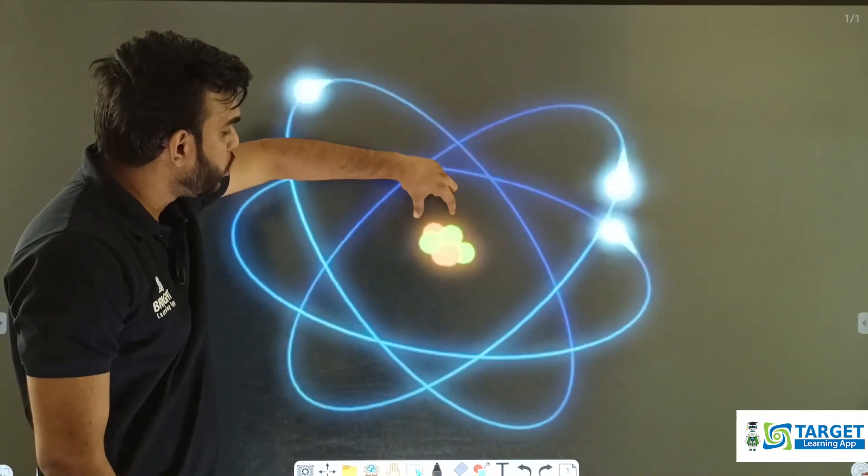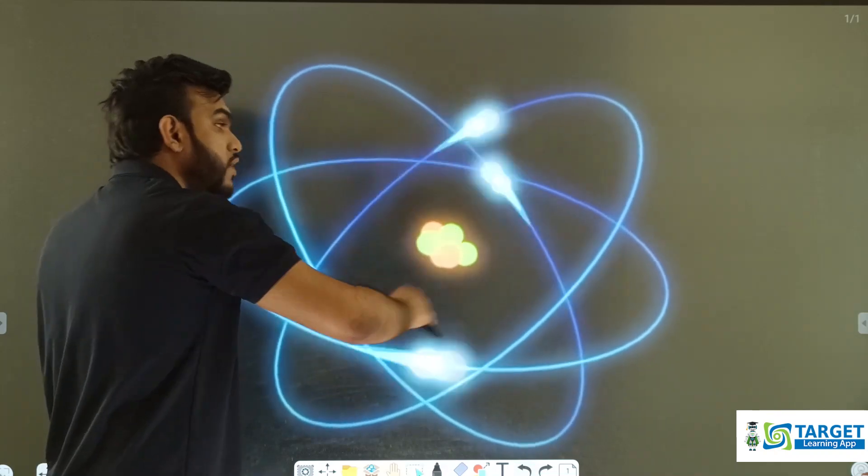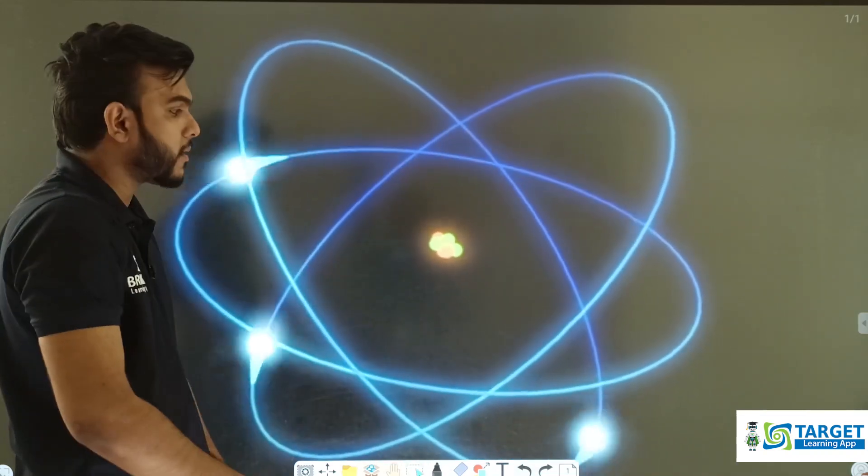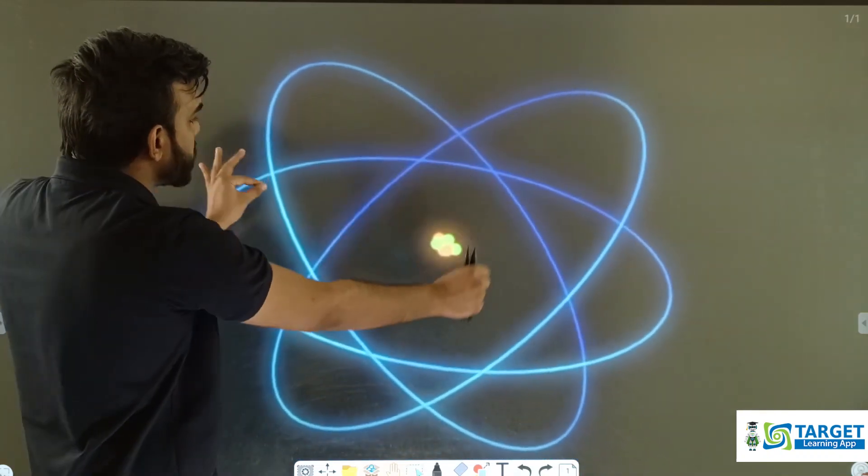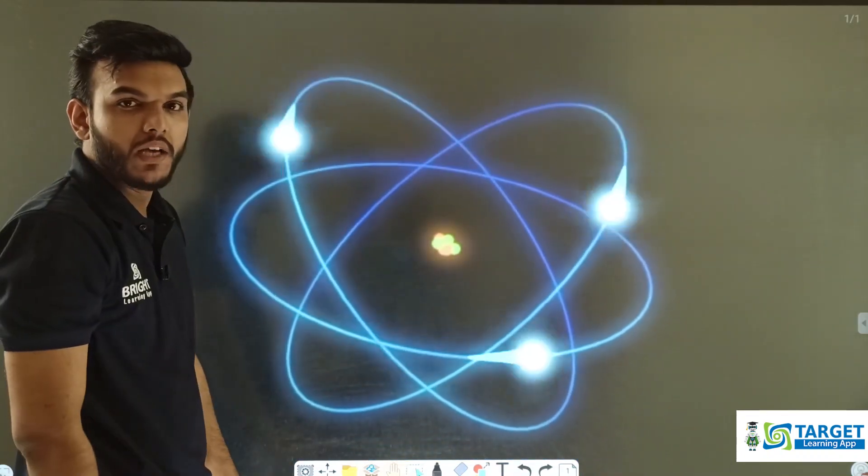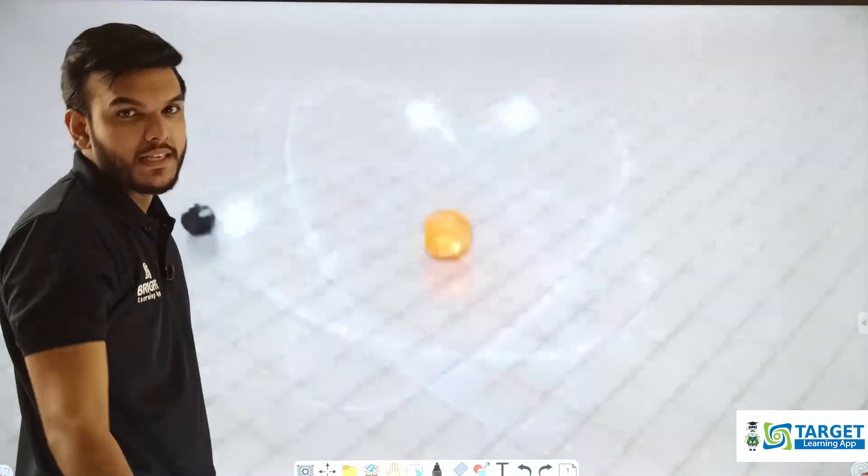When considering the size of the nucleus compared to the size of the atom, the nucleus is negligible to our naked eye. The electrons are also negligible to our naked eye. That's how small an atom is.